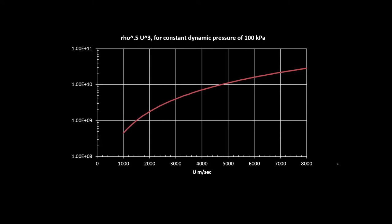We're plotting the parameter root ρu cubed for a constant dynamic pressure flight path of 100 kilopascals. You can see the factor here - every time you double your velocity, you have 4 times increase in heat transfer. A very difficult design situation to overcome.